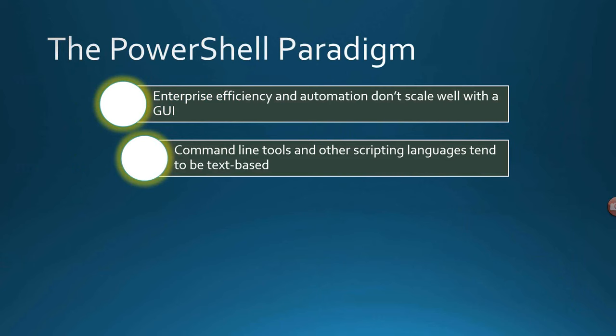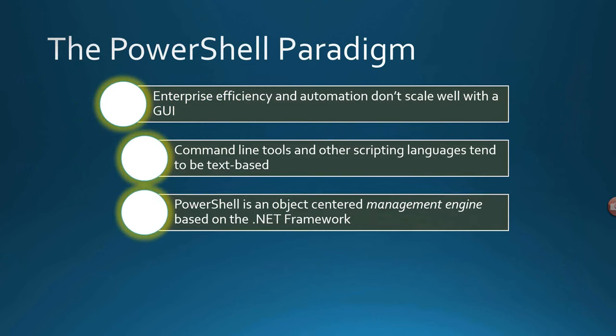The whole thing of PowerShell comes about because if we want to scale, if we have a huge enterprise and we want to be efficient, we can't do that with a GUI. GUIs are designed to do what they're designed to do, and we can't get enterprise efficiency and automation with a GUI. In the past, we've had things like VBScript, Batch Files, Perl, and other languages and command line tools. Way back in the days of NT4, we had a slew of resource kit tools, but those all tended to be text-based with different syntaxes — it was complicated to figure out each new tool set.